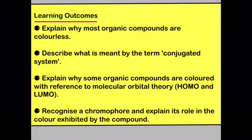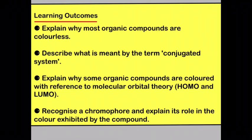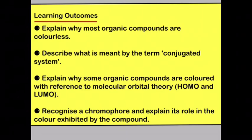So by now you should be able to explain why most organic compounds are colourless, describe what is meant by the term conjugated system, use the terms HOMO and LUMO to explain why some organic compounds are coloured with reference to molecular orbital theory, and recognise a chromophore and explain its role in the colour exhibited by the compound.